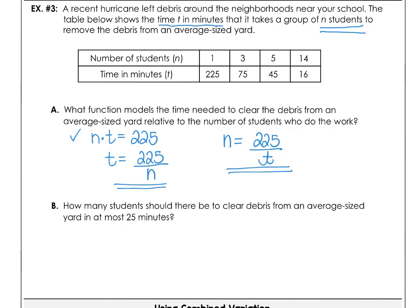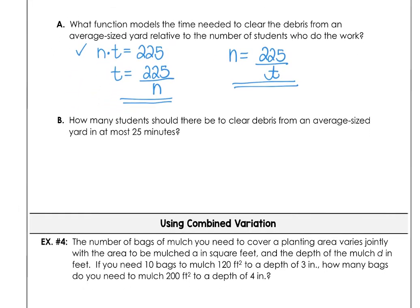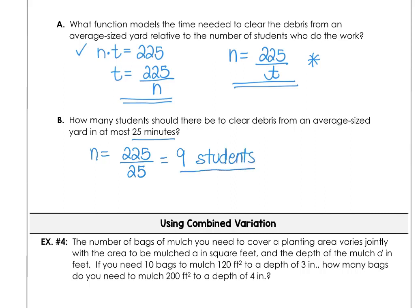In Part B, we need to find how many students are needed to clear the debris in at most 25 minutes. Using n equals 225 divided by t, with t equal to 25 minutes: n equals 225 divided by 25, which is 9. So 9 students are needed to complete the job in at most 25 minutes.